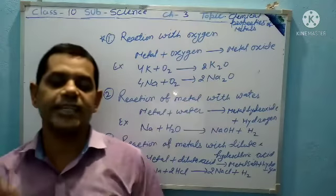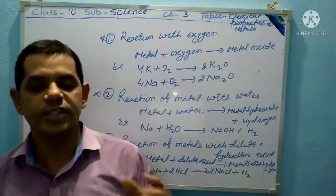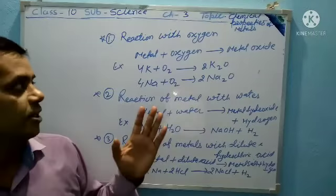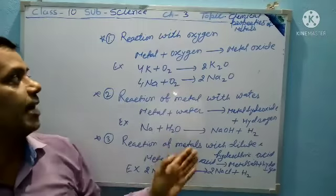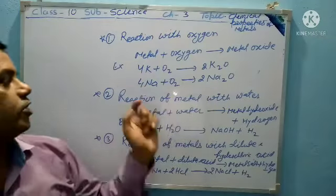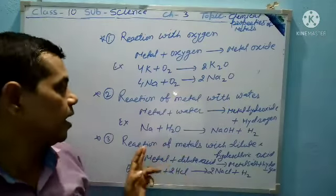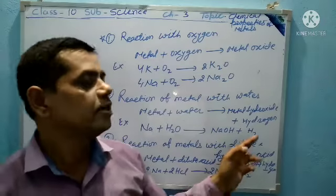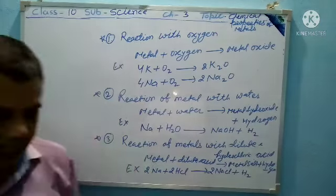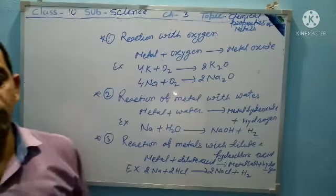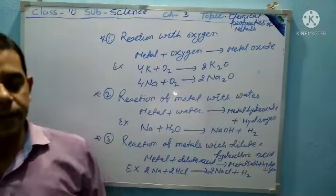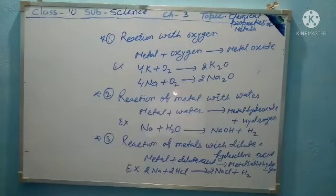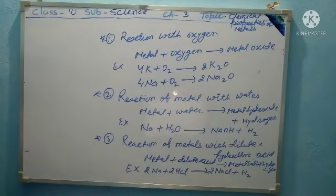So these are the reactive series of metals — three types of reactions: reaction with oxygen, reaction of metal with water, and reaction of metal with dilute hydrochloric acid. Now, the order of intensity or reactivity of metals is known as the reactivity series.